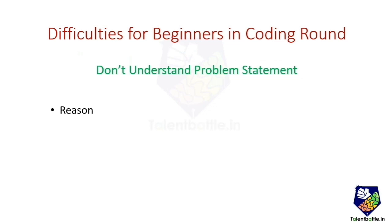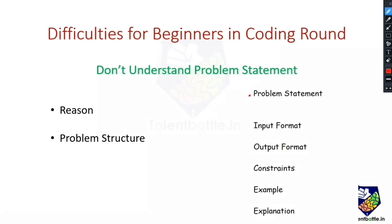But in coding rounds, questions might be given in story format, so you also have to understand what exactly is expected from you. The problem structure is typically like this: first, a problem statement will be given, possibly in a story-like format, generally consisting of up to 5 to 10 lines. After that, the input format will be given — that is, what exact values you have to take as input. After that, the output format will be given — what exact values you have to print as the answer.